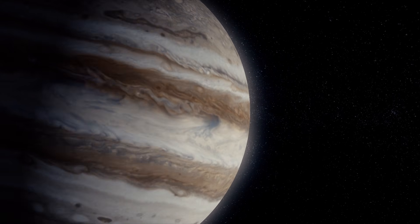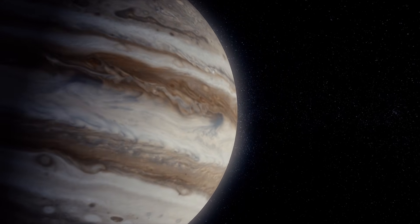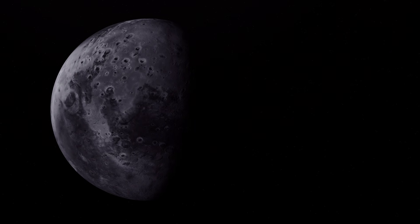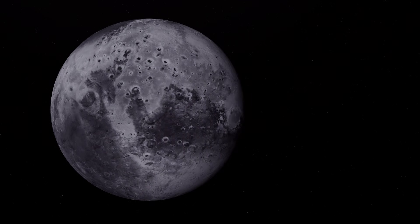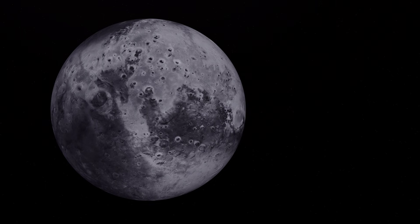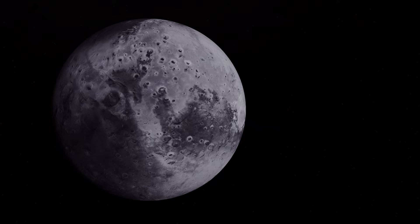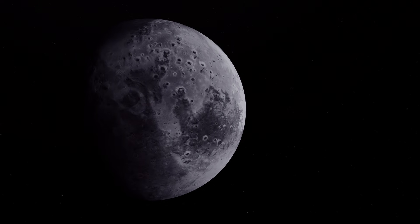This tilt creates the most extreme seasons in the solar system. Imagine a day that lasts for 42 years, with one pole pointed directly at the sun, followed by a night of 42 years of darkness and freezing cold in the very same spot. It is a world of absolute extremes.